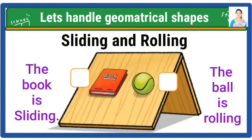Now let's understand the sliding and rolling objects. The book is sliding. Those objects having flat surfaces, that object slides down.